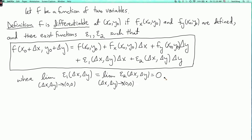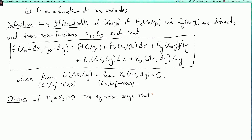This is slightly more complicated than the standard definition, but it will be convenient to write it this way, as we'll see. This is a complicated equation — what is going on here? Observe: if epsilon_1 and epsilon_2 are equal to zero, then what does this equation say? It says that the graph z = f(x,y) is the same as the tangent plane.